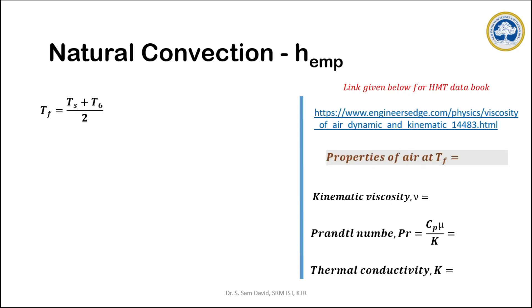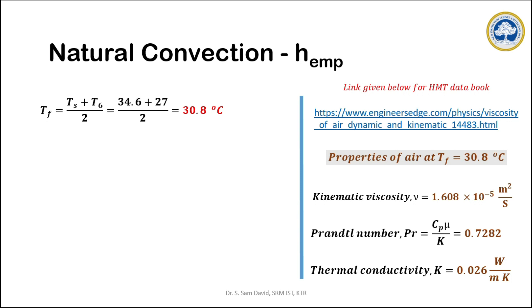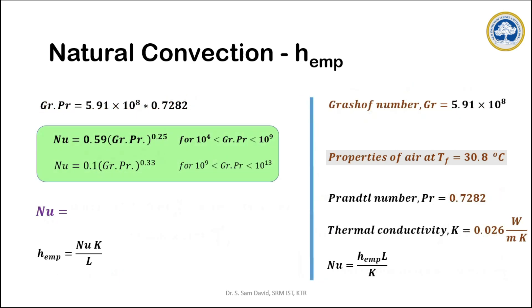We need to know the film temperature to identify the air properties from the table. The film temperature is the average of the surface temperature of the rod and the ambient temperature — which gives 30.8°C in this case. From the data sheet, we can identify the corresponding air properties at 30.8°C and proceed with calculations. With all required data available, we substitute into the Grashof number formula to calculate it.